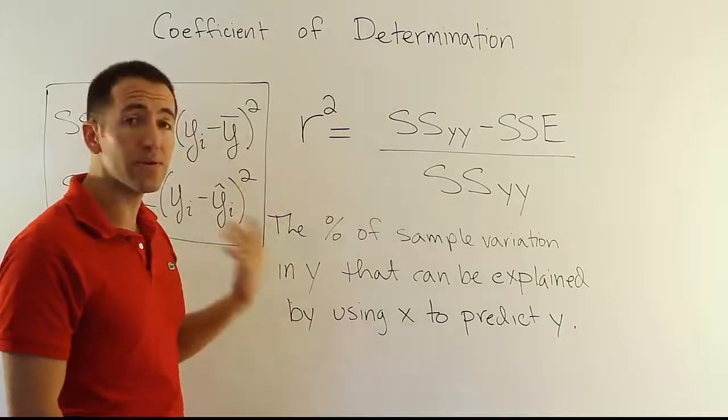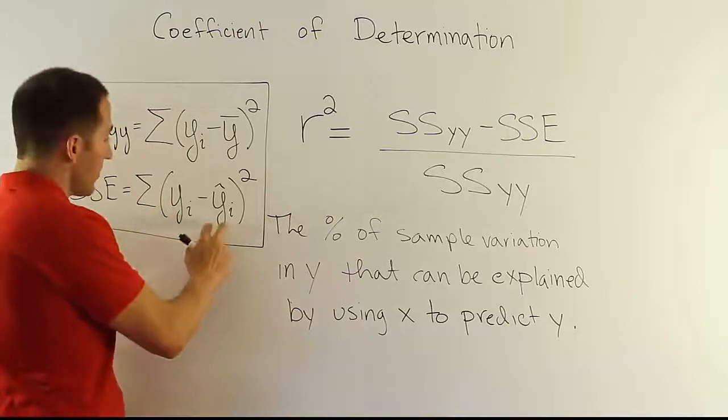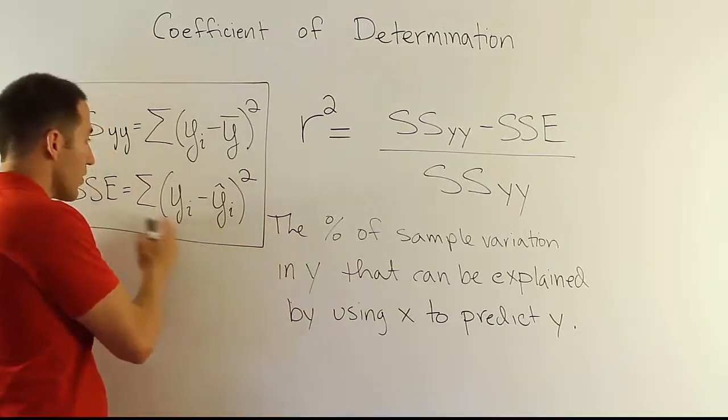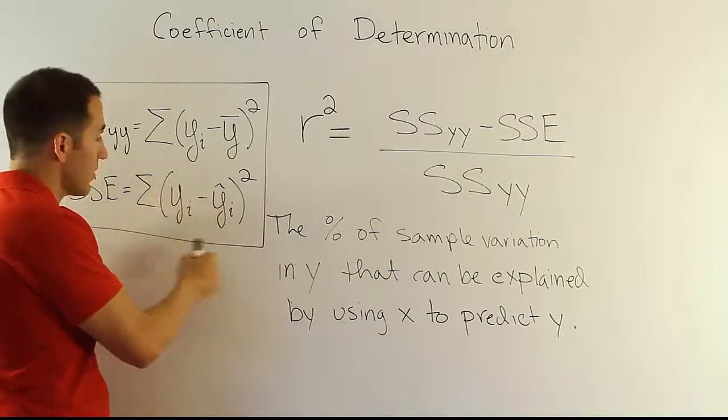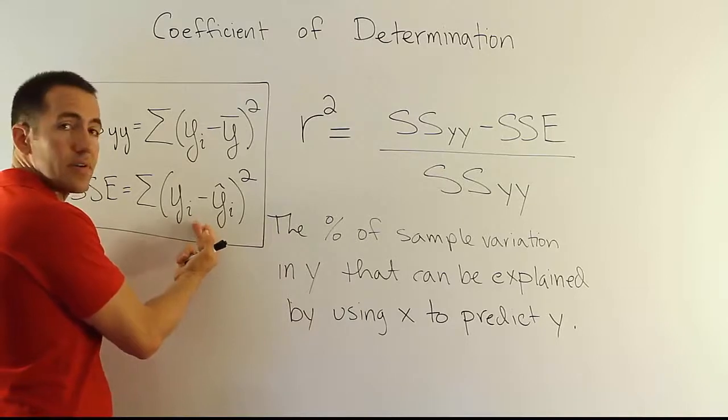So essentially, we have a possible range of values from zero to one, and we're essentially saying as you get closer to one, it means the model has done a very good job. Because remember, if this predicted value is very close to the observed value, this overall quantity is small. So if these are consistently close to their observations, then the error is very small.